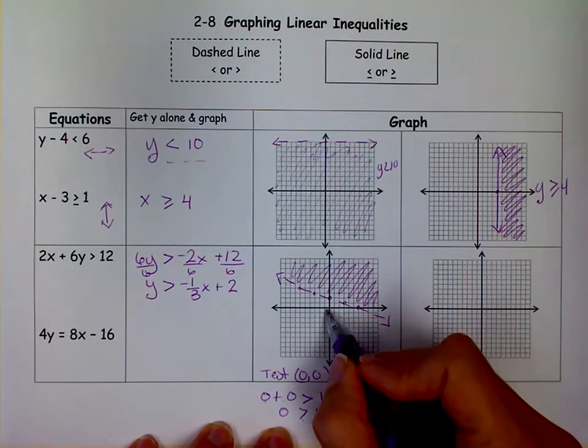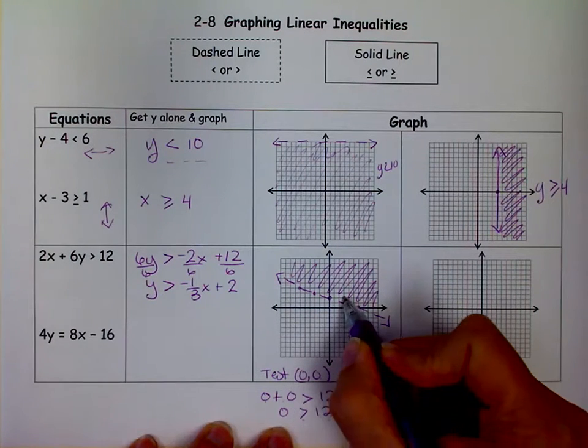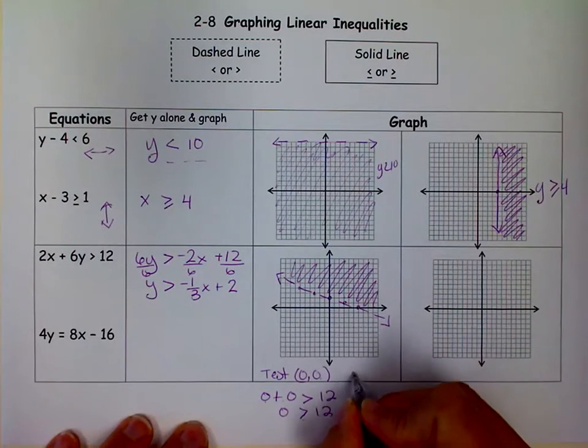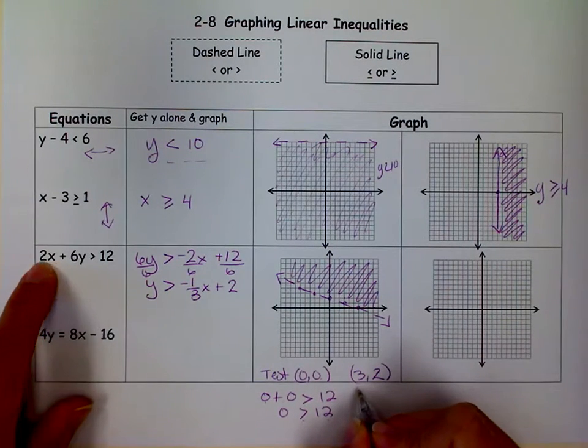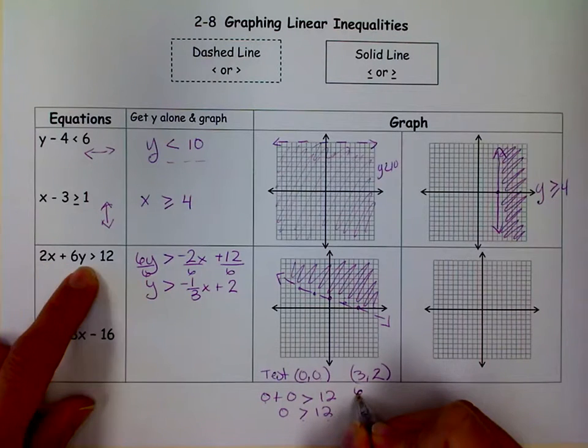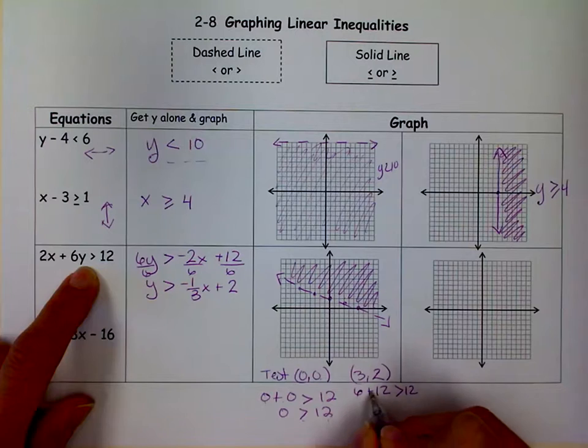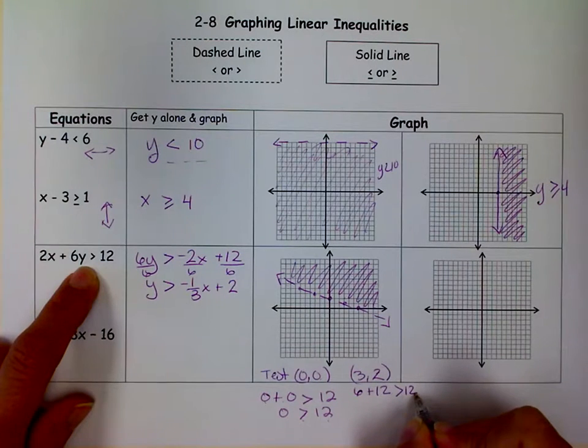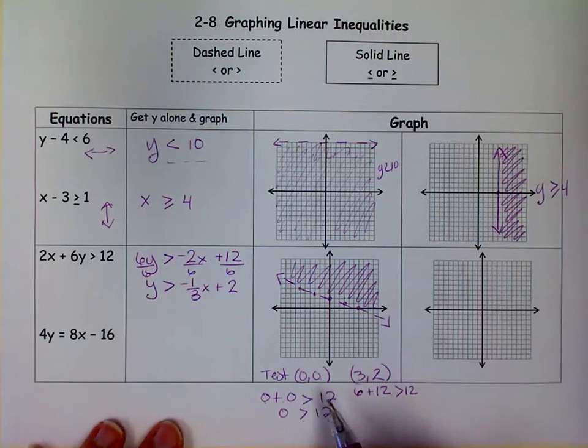If I had picked another point, like let's say I picked 3, 2, that's on that side of the line. I would do the same thing. I would put 3 in for X and get 6. I'd put 2 in for Y and get 12. Is 6 plus 12 greater than 12? Yes, it is. That's why I shade that way. You can pick any point, but I like to pick a point where at least one of them is 0 to make it easier.